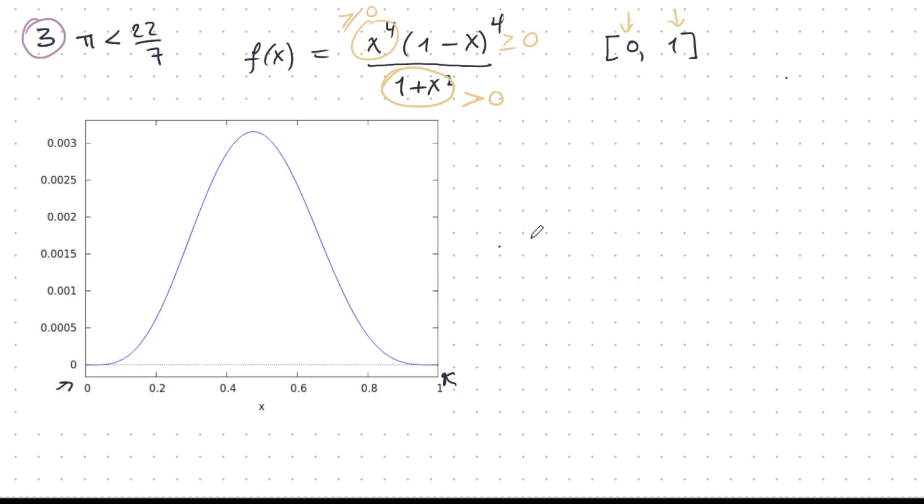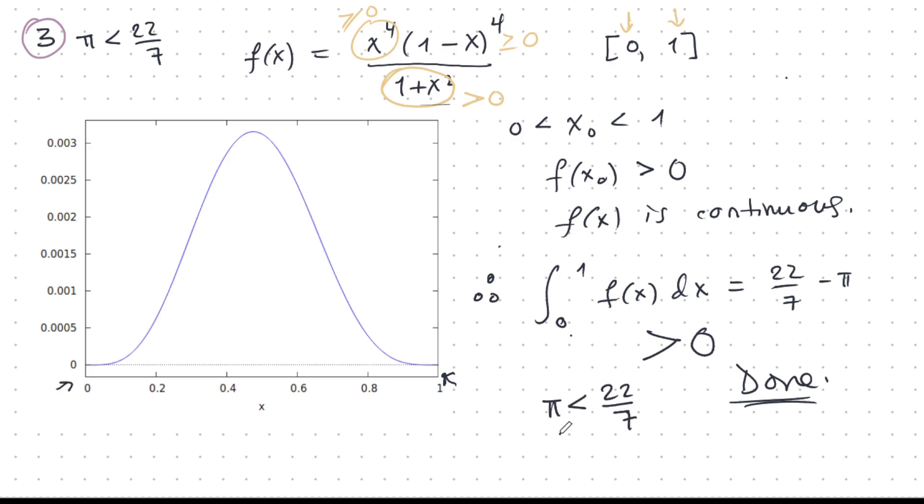It's only really 0 at the endpoints of this interval. Now you're saying, but you're using a computer to plot this. You said you didn't want to use a calculator. Okay, but you don't need to plot this. Just find any x0 which is strictly here, and you can easily show that this has got to be greater than 0. And then f of x is continuous. Nothing bad happens because this denominator is well-behaved. And so therefore, the integral from 0 to 1 f of x dx, which just happens to be 22 over 7 minus pi, this is strictly greater than 0, and we're done. We have proved it. Pi is less than 22 over 7.